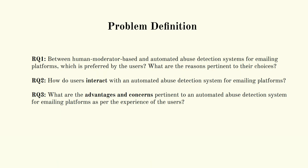We explore the following research questions in this study. First, we find out how users interact with an automated abuse detection system for emailing platforms. Also, we find out the advantages and concerns pertinent to an automated abuse detection system for emailing platforms, as per the experience of the users.